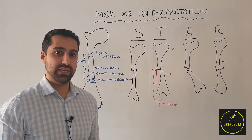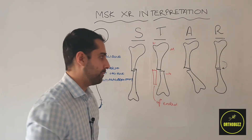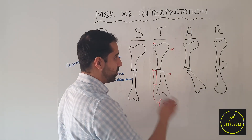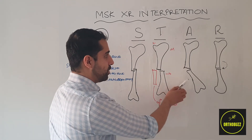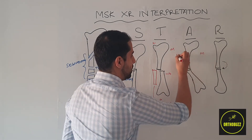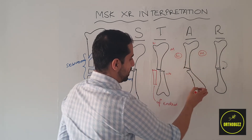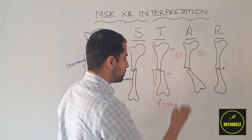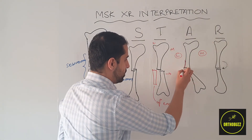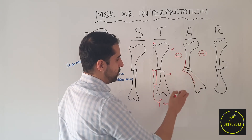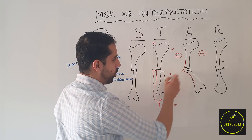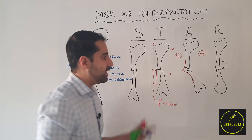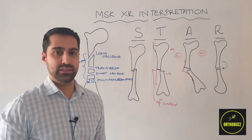Once we've looked at shortening and translation, we assess angulation of the fracture. Similarly to translation, we describe what the distal fractured part is doing in relation to the proximal part. In this example, the distal end is angulated medially in relation to the proximal end. You can also describe the apex of the bone — whenever there's angulation, there's always an apex or point. Here the apex is lateral. For ease of description, this is a medially angulated fracture.